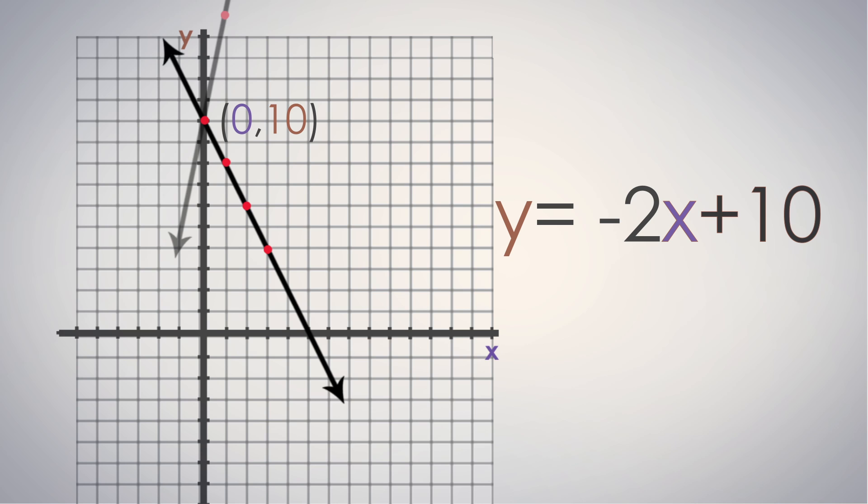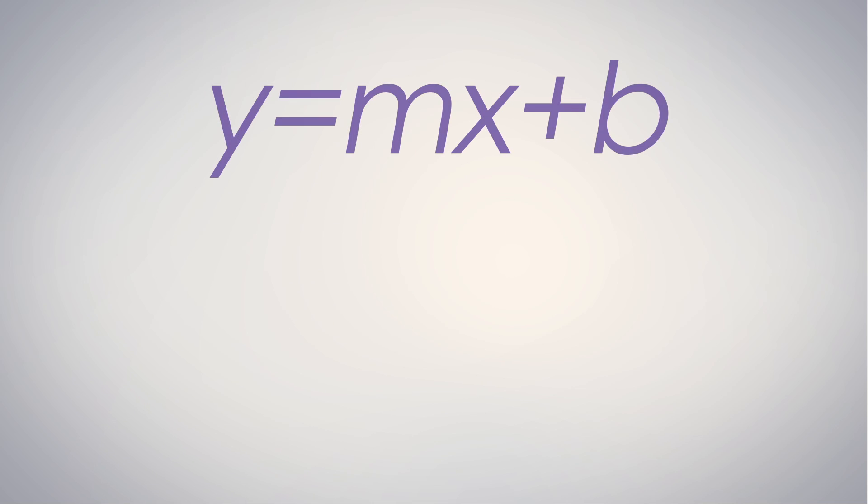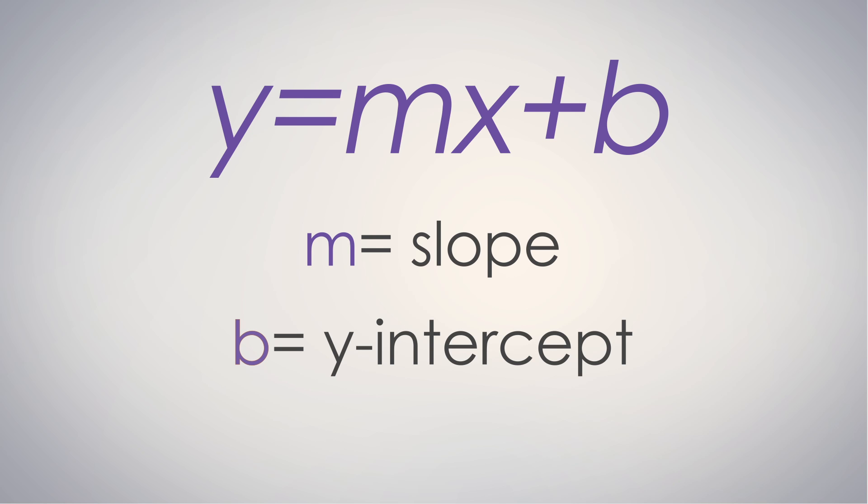This brings us to the popular formula we mentioned at the beginning of this video. y equals mx plus b, the slope-intercept form of linear functions, where m is the slope and b is the y-intercept.